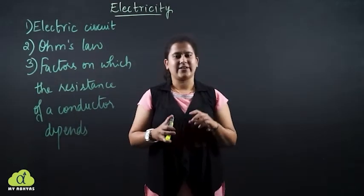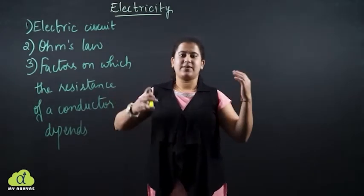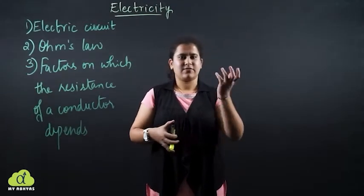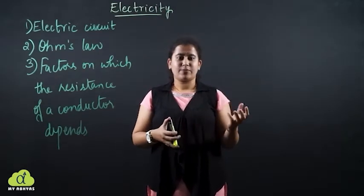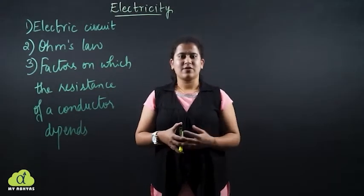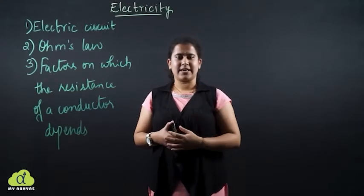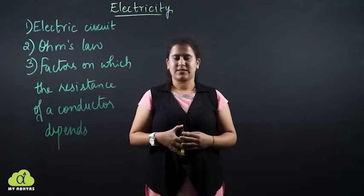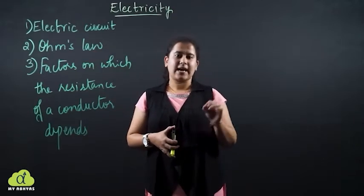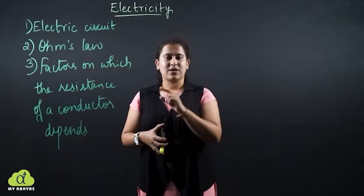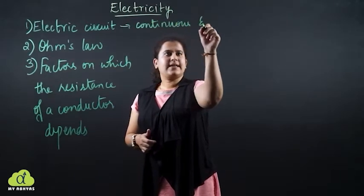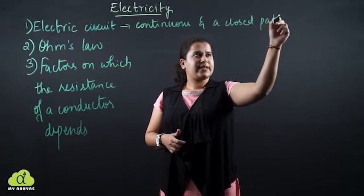Coming to the first one — the electric circuit. Whenever in previous days you would take out parts of some device, there would be some circuits with tiny particles and we would be mesmerized to see how they are connected. Nowadays, because of more exposure to social media, these things are known even to standard students. So, an electric circuit is nothing but a continuous and closed path in which electric current passes.